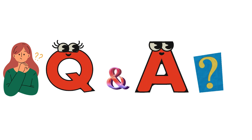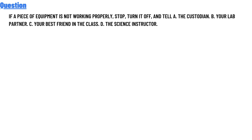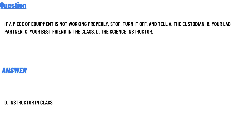Our question today is: if a piece of equipment is not working properly and stops, you should turn it off and tell — option A: the questions; option B: your lab partner; option C: your best friends in the class; option D: the science instructor. The correct answer is option D, the instructor.